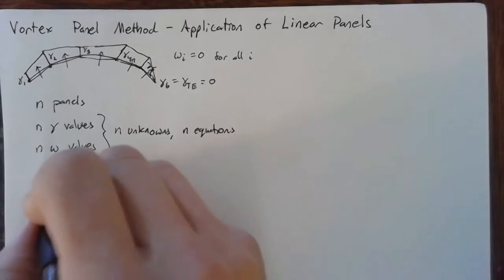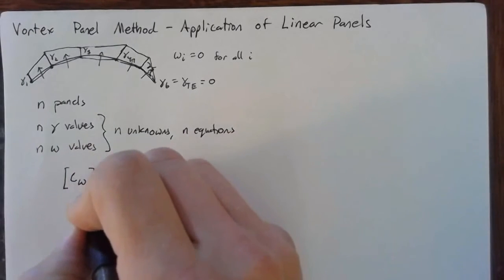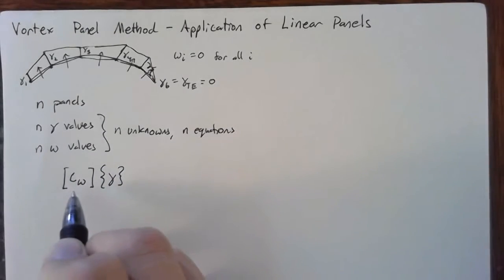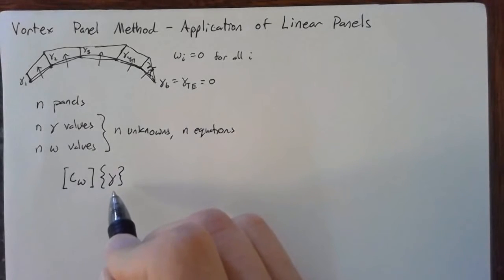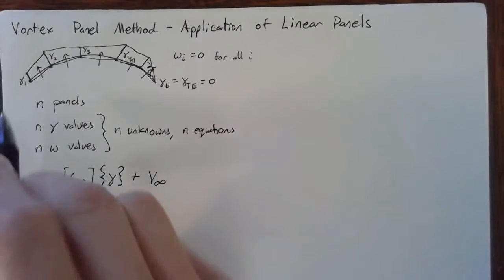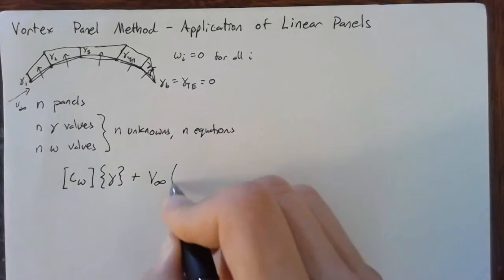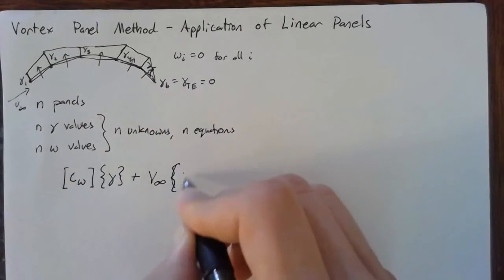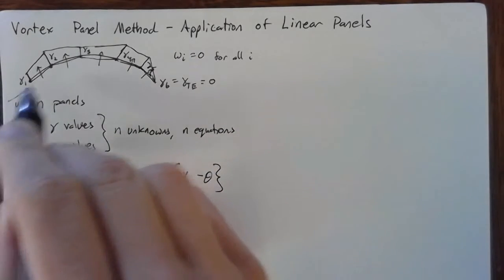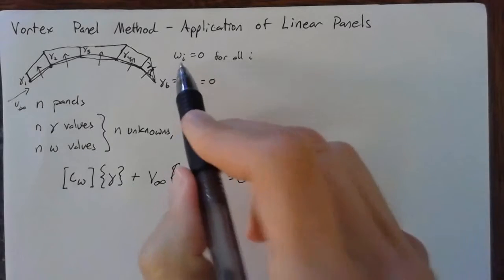And our goal here is going to be the same as the constant panel, which is to arrive at a system of equations that looks like this CW term, this upwash coefficient term, multiplied by our vector of gammas. And then added to that, we're going to have our contribution of the uniform flow. And that's going to affect the panels due to alpha minus theta, where theta is the actual slope of the panels. And that, overall, needs to be equal to zero, as we said before.